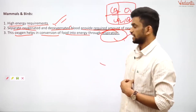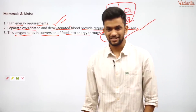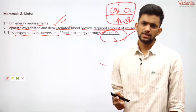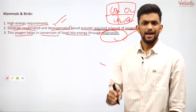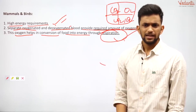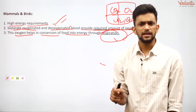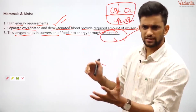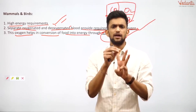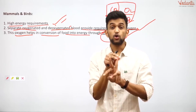We'll end today's session here. In coming sessions, I'll discuss two more questions and wrap up life processes. In the next class, I'll draw the circulatory system in a simpler way so you don't get scared of complex diagrams. Remember three things: write points, underline important terms, and don't be scared of diagrams — practice them.